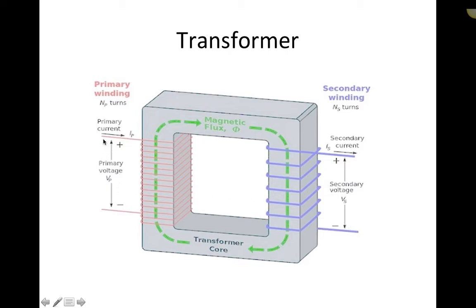One of the important ways that transformers work is through electromagnetic induction. We send in alternating current on the primary side of the transformer. As current wraps around these coils it produces a magnetic field that passes through the center of the coils. Because the input current is AC, or alternating, it creates an alternating magnetic field through the center of the primary coils. Because you have an iron core, that changing magnetic field also passes through the secondary coils, inducing a voltage and a current through them.